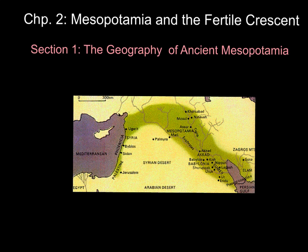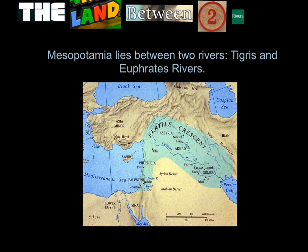Chapter 2: Mesopotamia and the Fertile Crescent, Section 1: The Geography of Ancient Mesopotamia. Just to review, put the title at the top of the page with the section title right below it. The heading for this particular section of notes is 'The Land Between Two Rivers.' Make sure you write this down, because if you don't, it gets confusing when you just put the bullet points down and you don't have a heading.